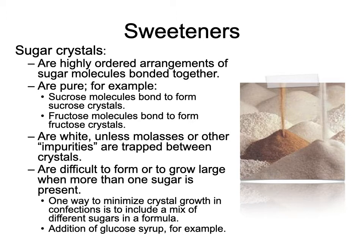Sugar crystals are highly ordered arrangements of sugar molecules bonded together, and they love to be in crystalline form — which is good for certain things, but other times we don't want a grainy product. Sucrose molecules bond to form sucrose crystals, fructose molecules bond to form fructose crystals, and generally they're white unless not fully purified. Impurities trapped between crystals cause the sugar to have color — usually brown — from small amounts of proteins, minerals, and residual molasses.